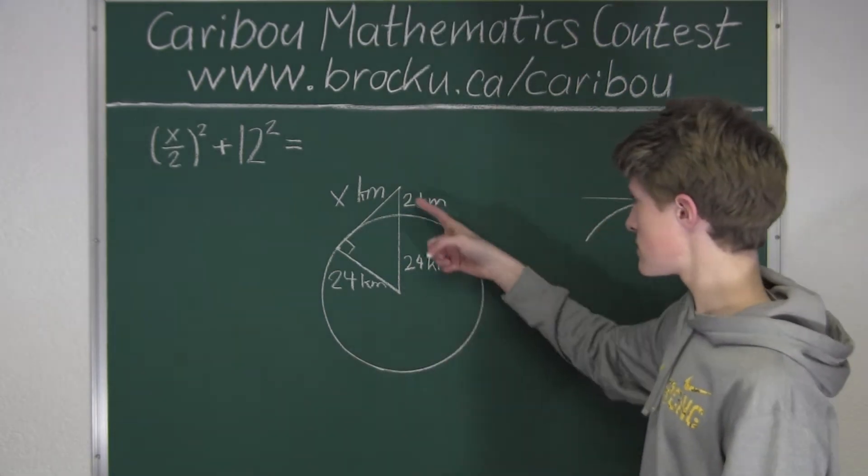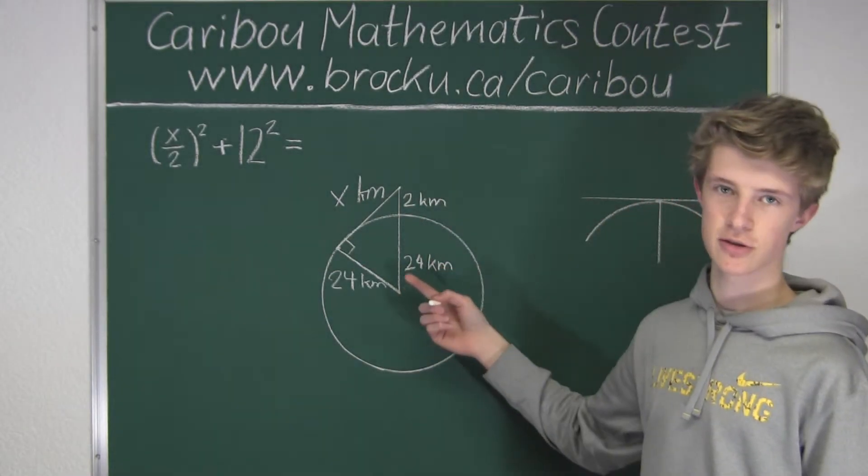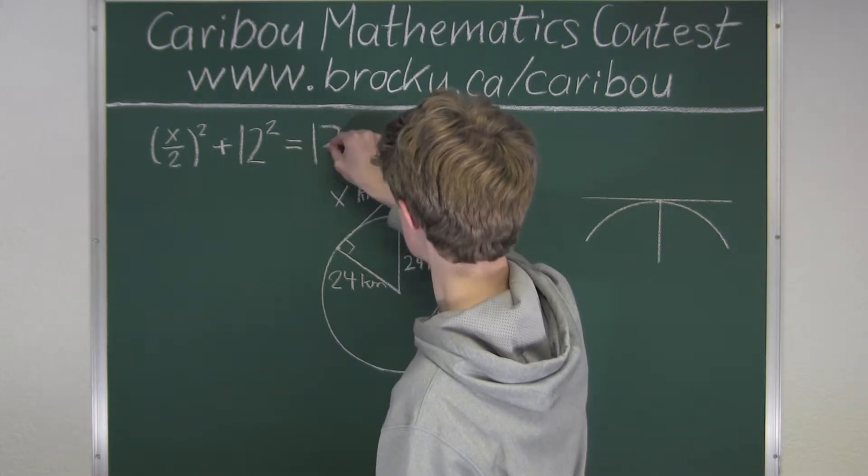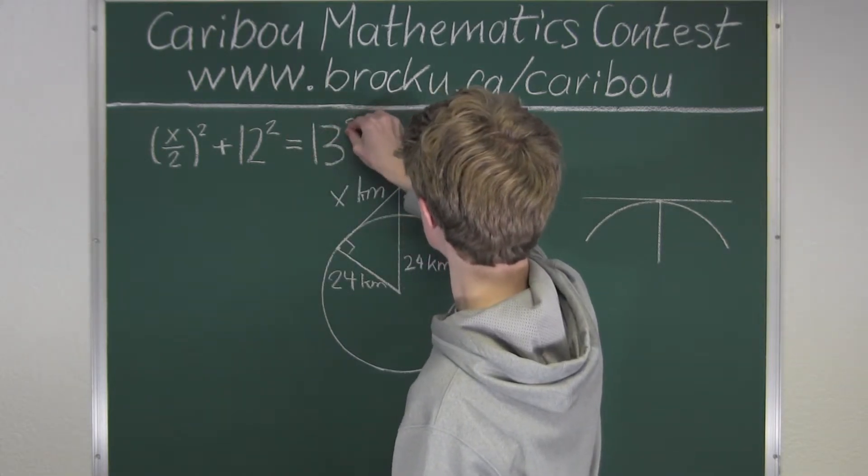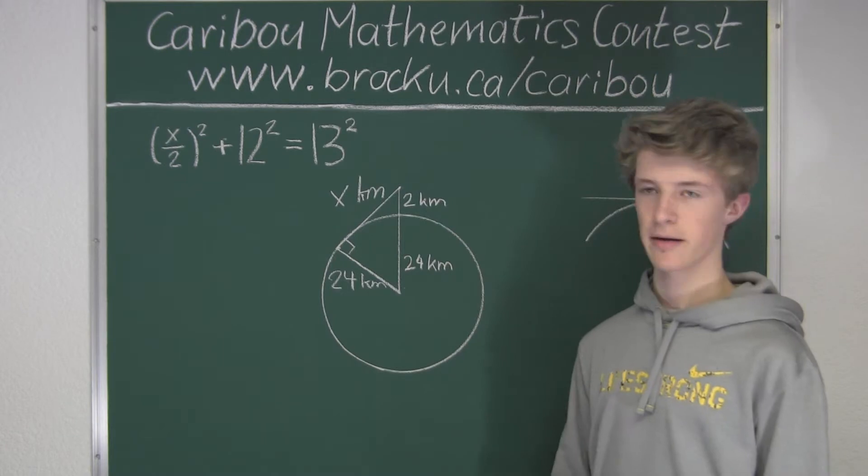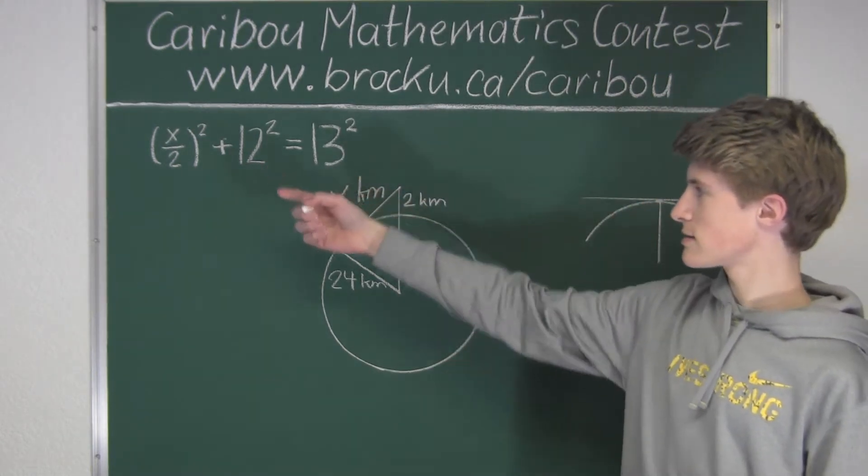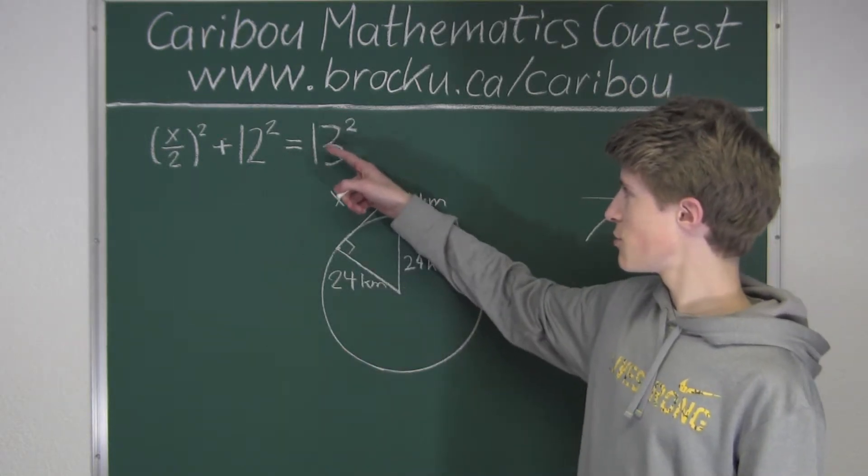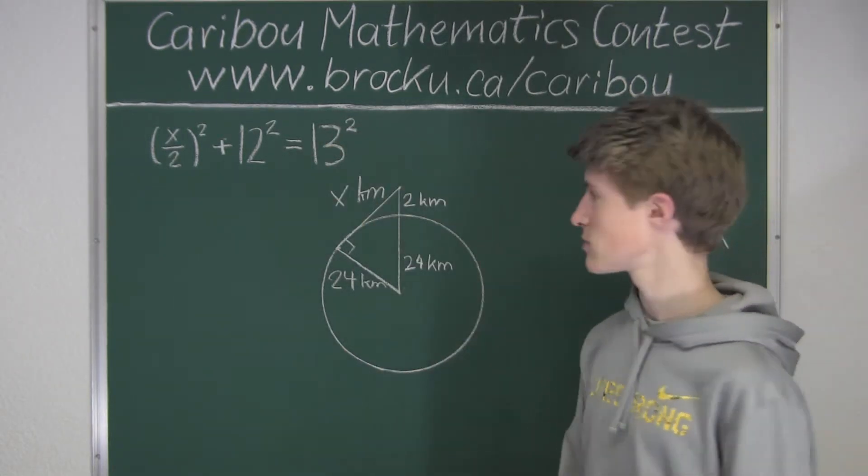And this equals 26 divided by 2, which is 13, so 13 squared. Okay, so now since we only want x on one side, we will have (x over 2) in brackets squared, which equals 13 squared minus 12 squared.